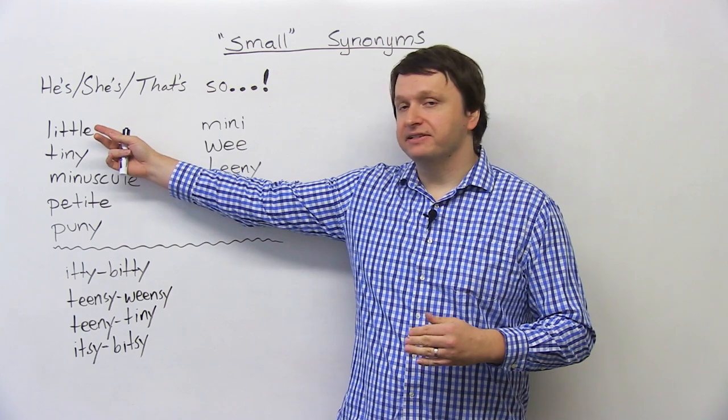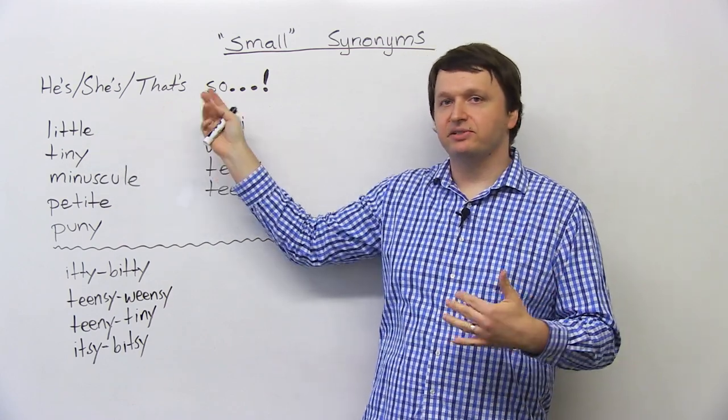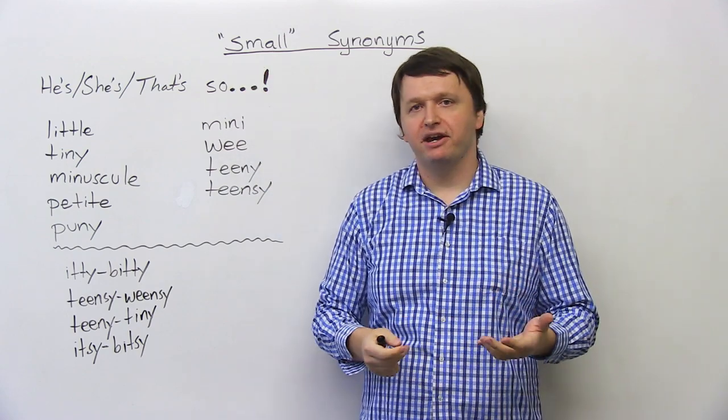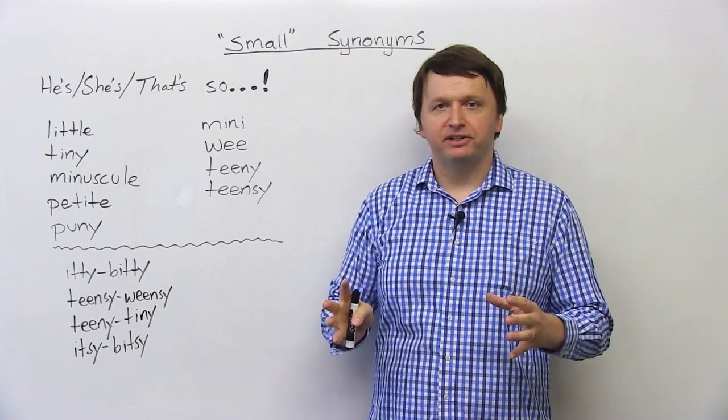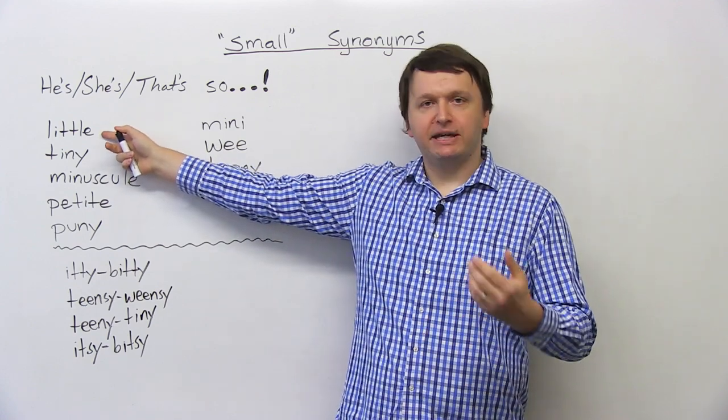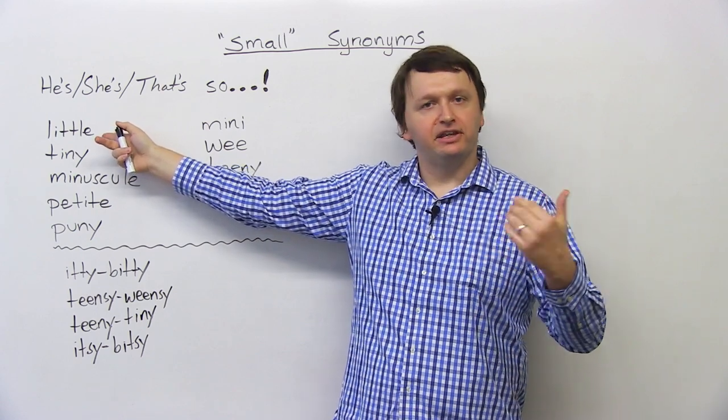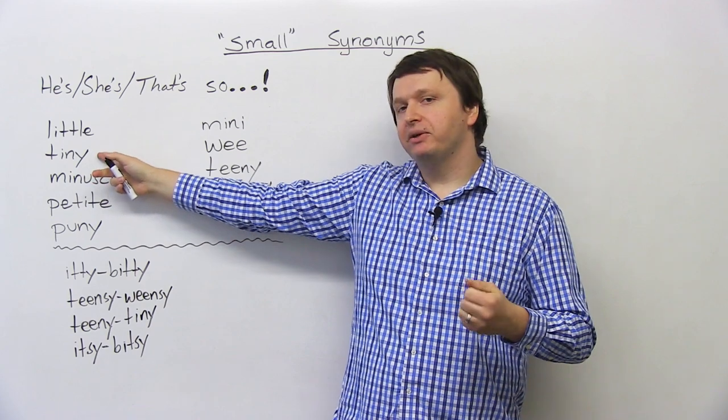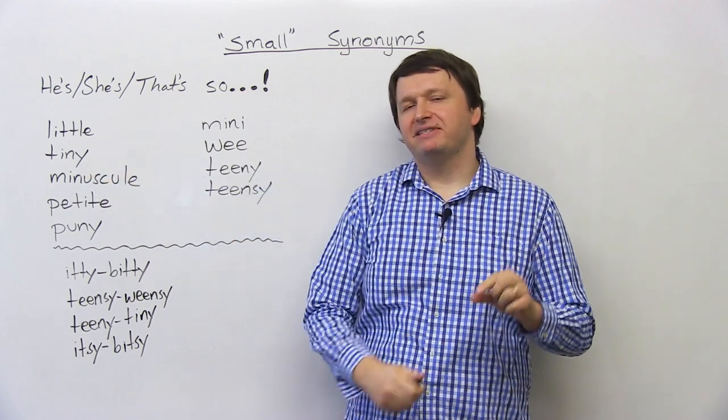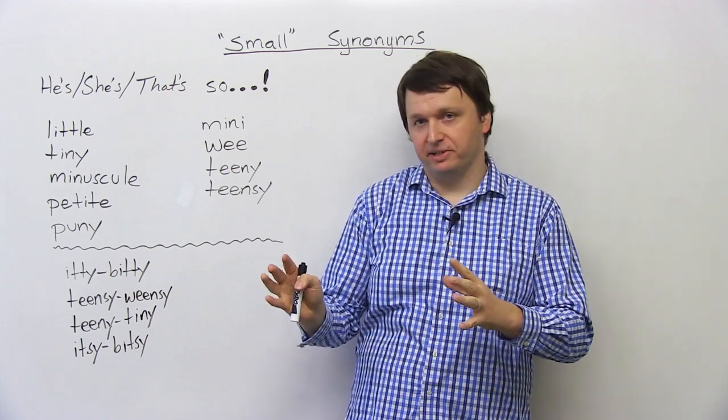First, we have a sentence. He's, she's, that's. You can say it's so. Obviously, you could say small if you're talking about a building, a chair, a table, whatever it is that you're talking about. You can also say that's so little. So little and small are probably the two most common words that you likely know, and you might know the next one as well, which is tiny.